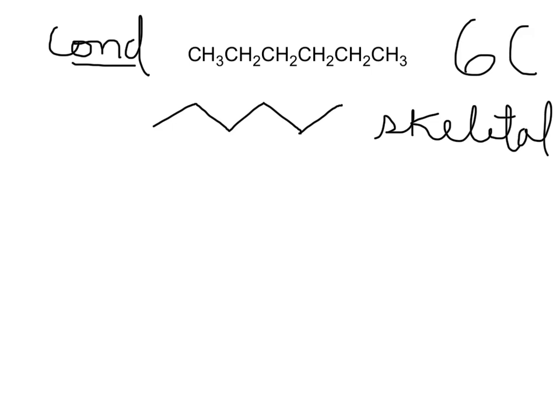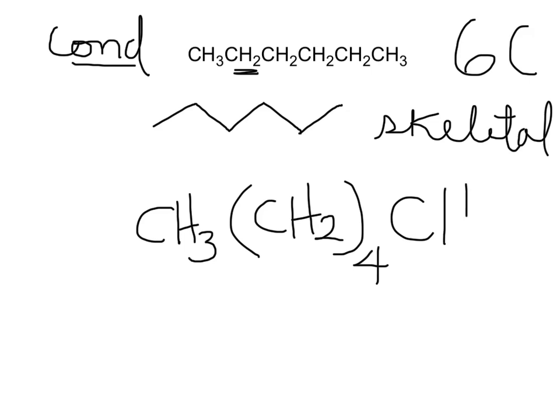That will be one end CH3, and count how many methylene groups we have. We have CH2, and that will be four, plus another end CH3. These three structures are representing the same substance, and that is the molecule of hexane.